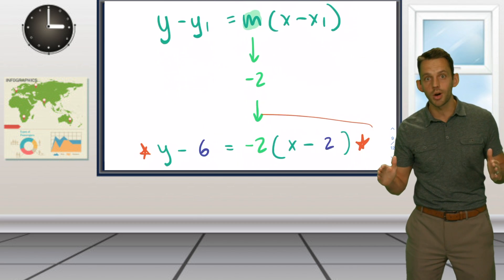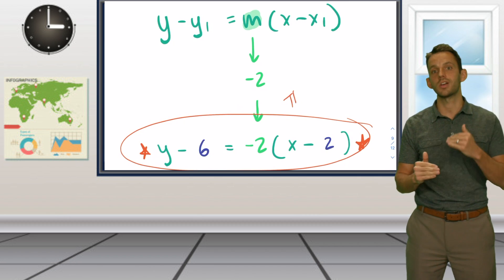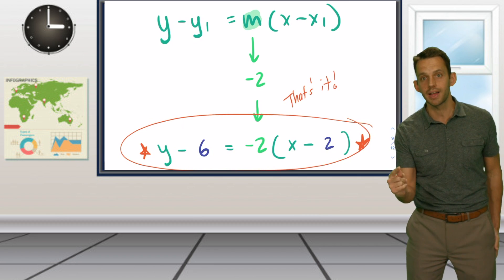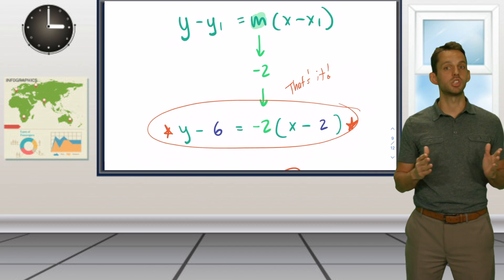In point-slope form, we simply put in our x, our y, and our perpendicular slope into the corresponding spots, and you are done. Much easier.